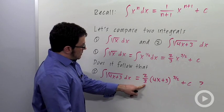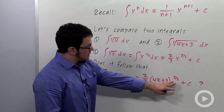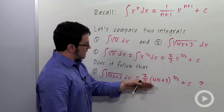I would get this answer, right? Just 2 thirds, 4x plus 3 to the 3 halves plus c, just following the exact same pattern.